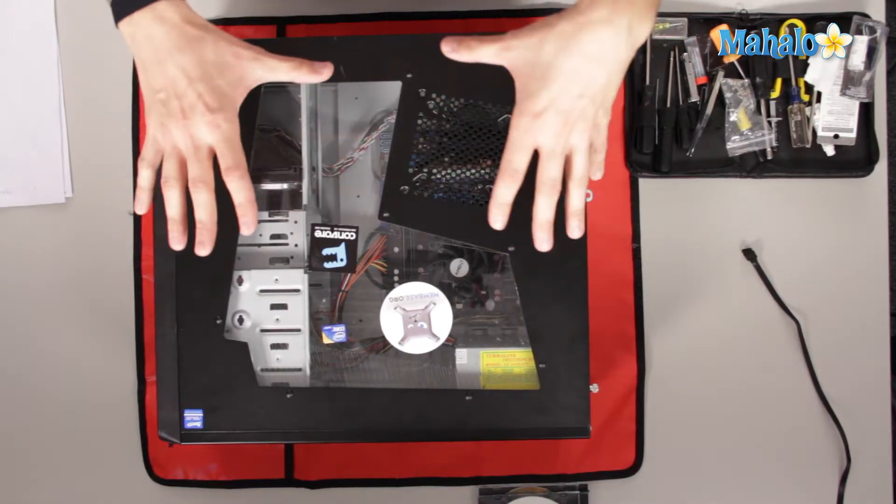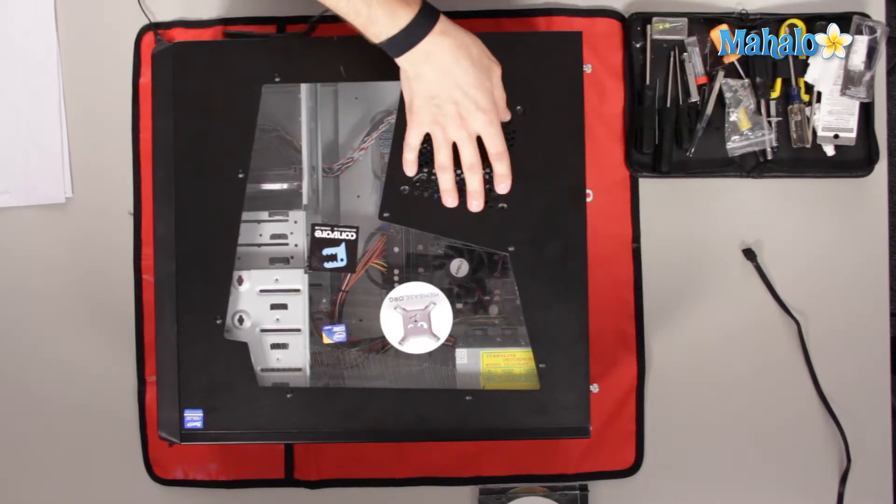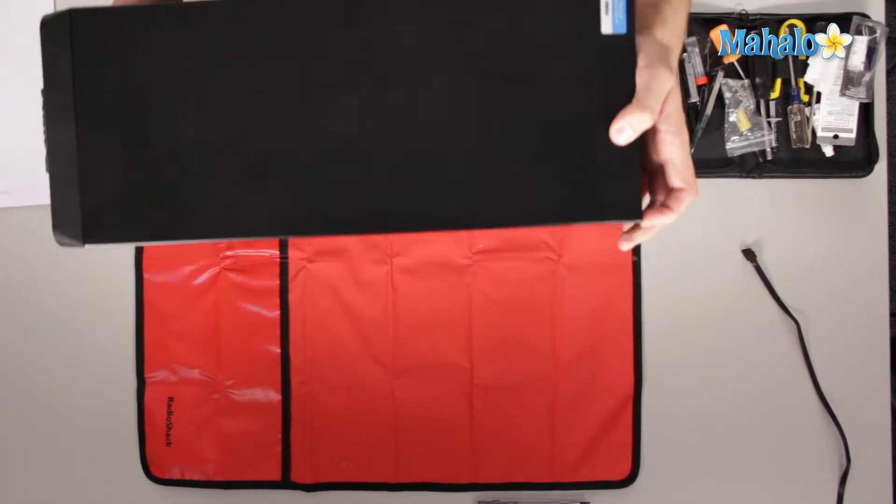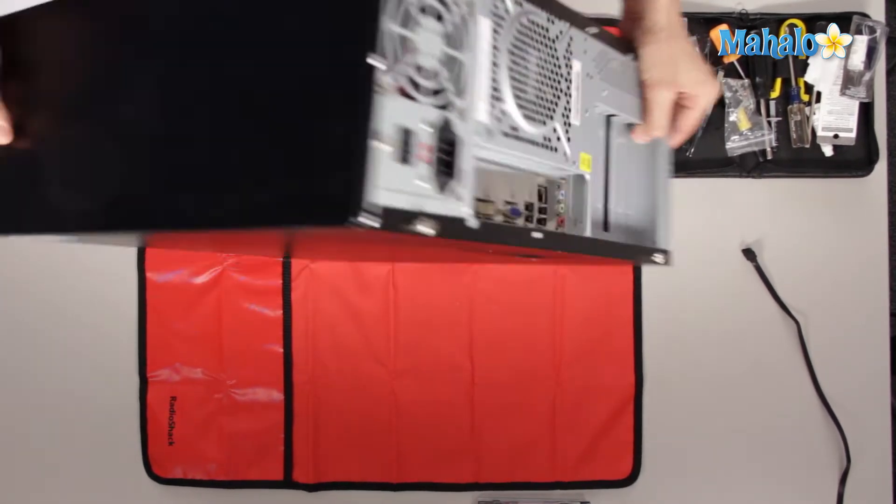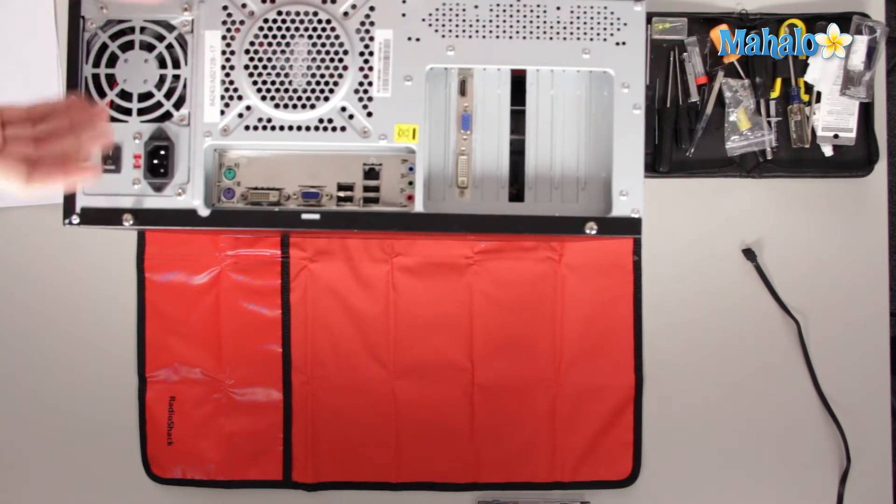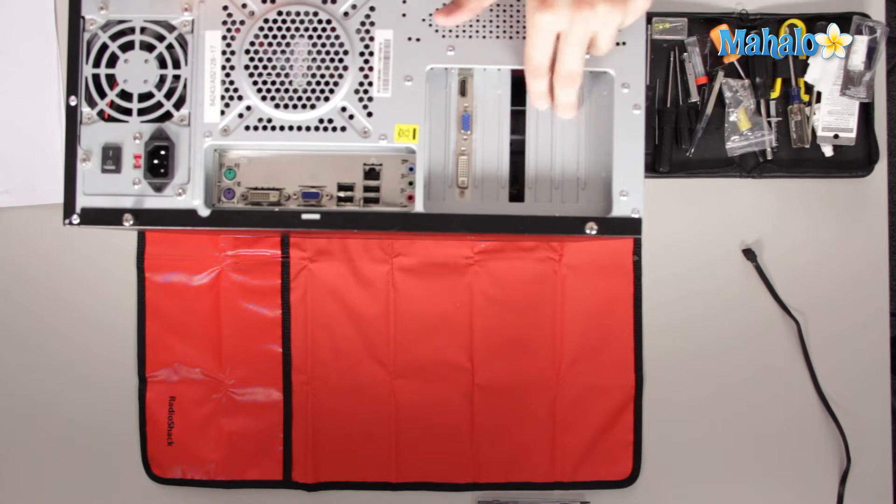So first off, we have an ATX standard mid-tower computer case. And in this computer case, we have a fan on the side. We have, flip this guy up, flip him over. We've got a fan on the back, and also a fan that's part of our power supply. We also have two, four, six, seven bays.